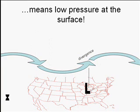Remember, pressure at the surface is nothing more than the weight of the air above you. If you're having upper level divergence, there's less air above you than there was before. Therefore, the pressure at the surface has to fall. Fundamentally, this is the process of cyclogenesis.